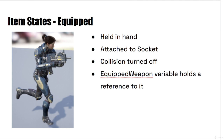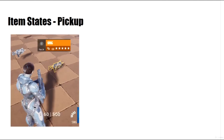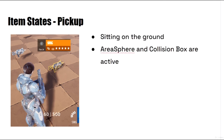The next state we're interested in is the pickup state. This is when the item exists as a pickup in the world — it's sitting on the ground. The area sphere and the collision box are active, meaning as soon as we walk into the area sphere we update our overlapping item count, and if we line trace onto the collision box then we'll show the pickup widget. It will not be attached to anything.